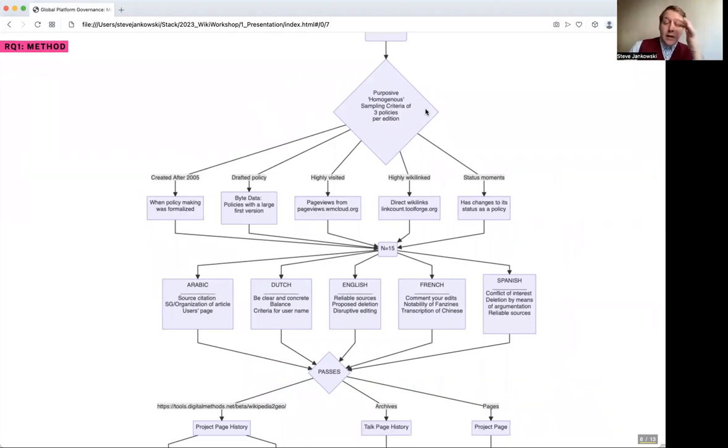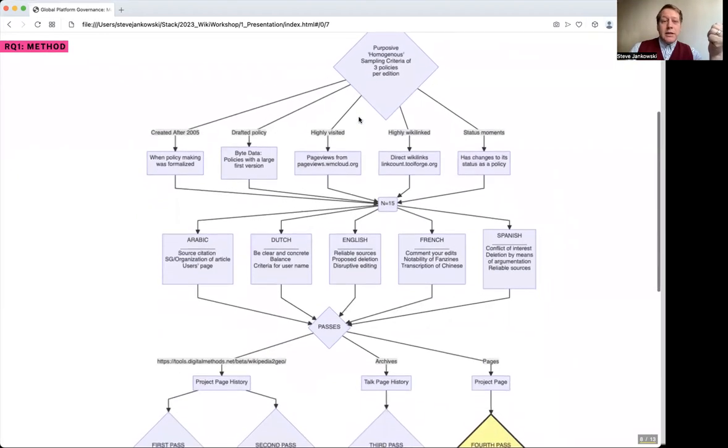We originally set out with 10, but that was too much, so we reduced it to three. We wanted these policies to be representative of what we could expect if someone is wanting to know how to reform or produce a new policy. The policies we looked at were ones that were created after 2005, because that was when the process of making policies started to be formalized.